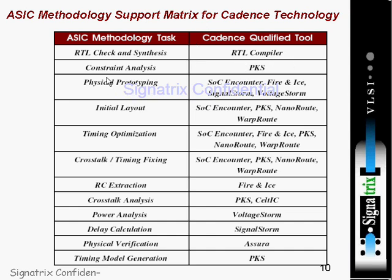In synthesis, you provide constraints and then analyze them. Analysis is done by PKS. For physical prototyping — which covers floor planning and routing — you use SOC Encounter, Fire and Ice, Signal Storm, and Voltage Storm. These are the tools used to perform floor planning and placement.